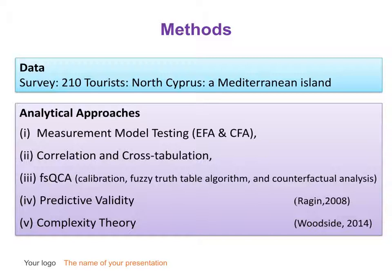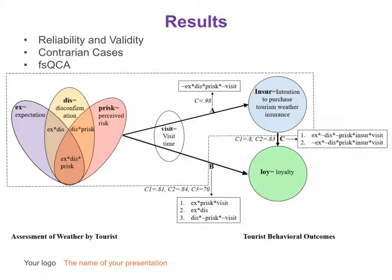Data was obtained from tourists who visited North Cyprus, a Mediterranean island. The following analyses were performed to test the measurement and configural model. The fuzzy set qualitative comparative analysis results were assessed with key tenets of complexity theory. The results provide evidence of reliability and validity of study measurements, and occurrence of contrarian cases demonstrates an asymmetric relationship between the study variables.